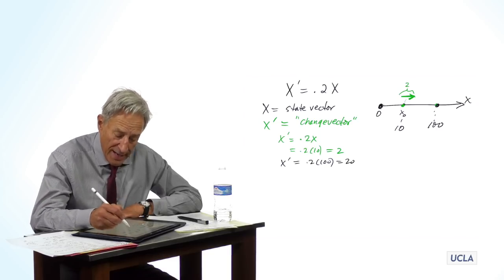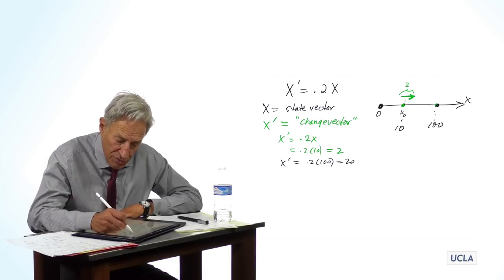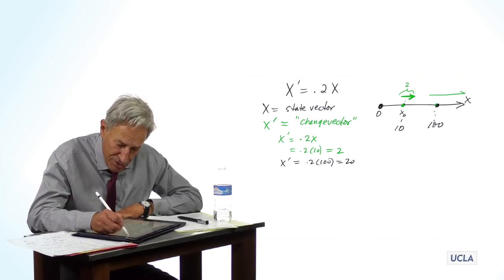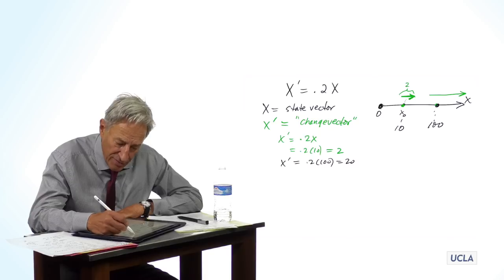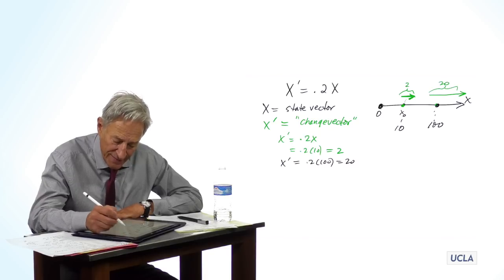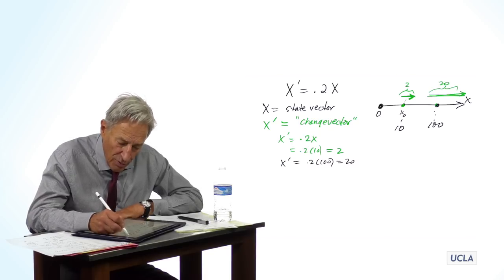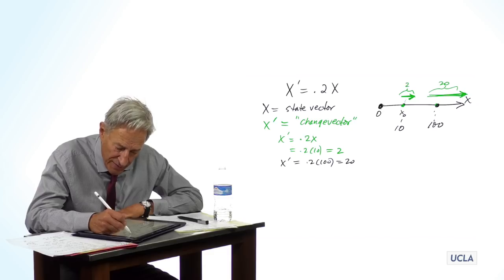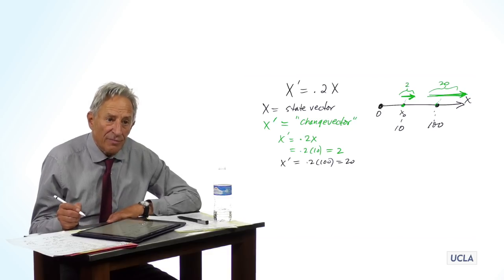So, at the point 100, we assign a much longer change vector, whose length is 20. And we assign that change vector to this point, 100.